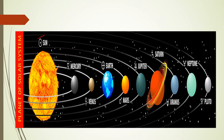Mercury, as you can see in the figure, is nearest from the sun. And farthest from the sun is Neptune. And Venus is nearest from the Earth.